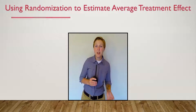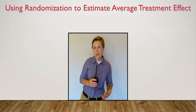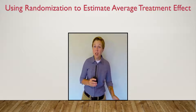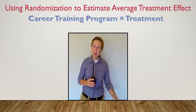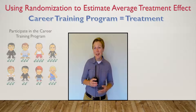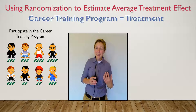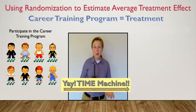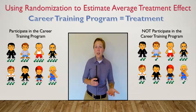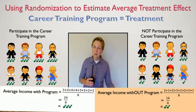Let's talk about using randomization to estimate average treatment effect. In the previous video, we were interested in knowing the effect of a career training program within a particular community. We discussed having community members participate in the career training program, and since the best comparison is oneself, we had them go back in time and experience life without the program. The difference in average income with and without the career training program is the average treatment effect.